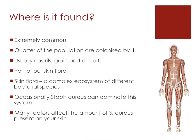It's a very common organism, and a quarter of the population are colonized by it. It usually lives in the nostrils, the groin, and the armpits, and can live in other parts of the body. It's part of our normal skin flora, which is a complex ecosystem of different bacterial species that normally don't cause any problems. Many different factors can affect the amount of Staphylococcus aureus present on the skin, including the pH, humidity, sweat, or other organisms present.